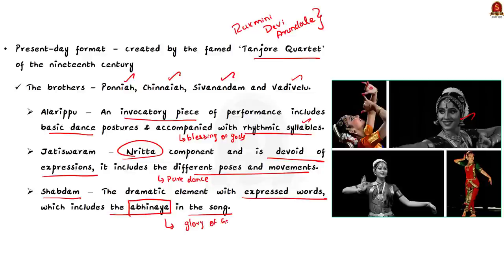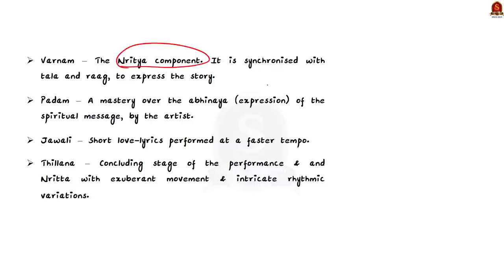The fourth is Varnam. It is the Nritya component. That is, it is the combination of dance and emotions and it is most important part of the whole performance. It is synchronized with the Tala and Raga to express the story. Next is the Padam. It refers to a mastery over Abhinaya. That is expression of the spiritual message by the artist. Music becomes light, dance becomes emotional in this part. The next is Javali. These are short love lyrics performed at a faster tempo. Finally, there is Tillana. Tillana is the concluding stage of the performance and comprises pure dance with exuberant movement and intricate rhythmic variations.